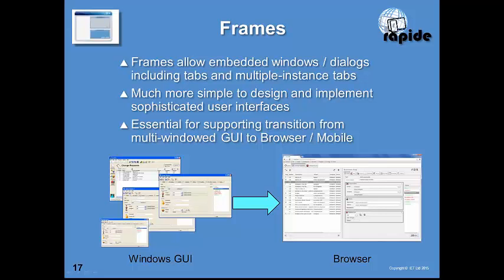Frames are another innovation in RAPID. A frame is an area in a window into which you can load another window — for example, loading a detail dialog from another procedure step, or loading multiple windows implemented as a tab control. Frames are essential to support the transition from a multi-windowed GUI environment to a browser or mobile environment. Typical GUI applications have many windows open simultaneously, but mobile and browser platforms don't easily support multi-modeless windows, so frames allow you to show multiple windows at the same time in those environments.